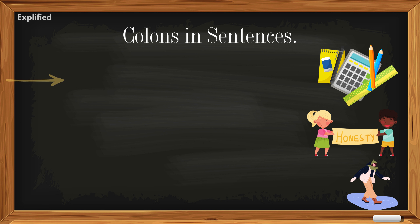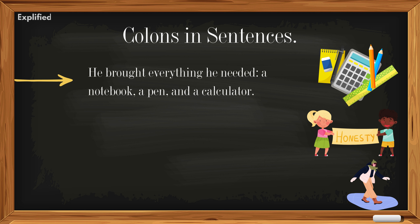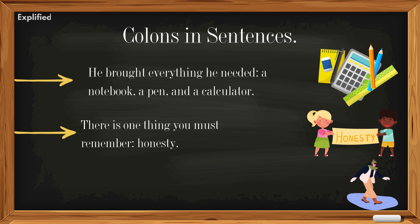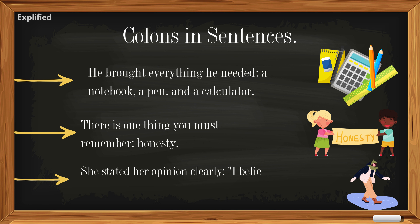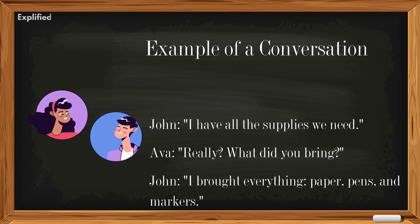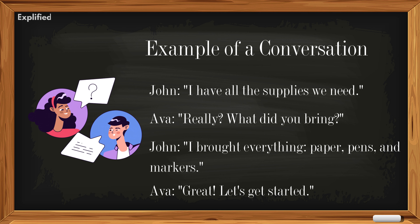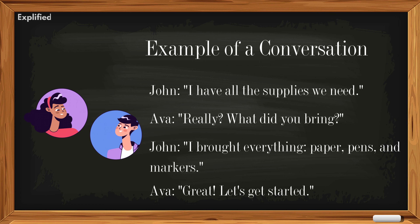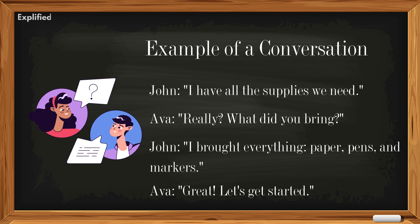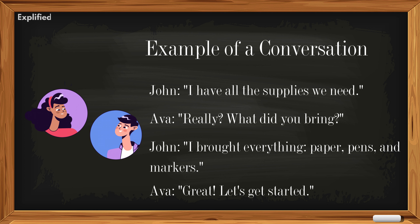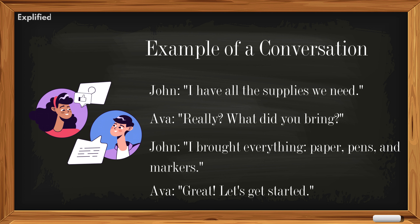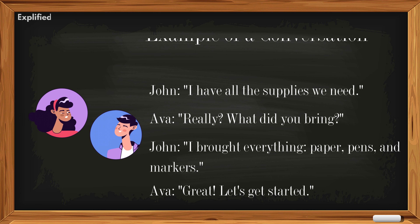Colons in sentences: He brought everything he needed: a notebook, a pen, and a calculator. There is one thing you must remember: honesty. She stated her opinion clearly: I believe we should proceed with caution. Example of a conversation — A: I have all the supplies we need. B: Really? What did you bring? A: I brought everything: paper, pins, and markers. B: Great, let's get started.